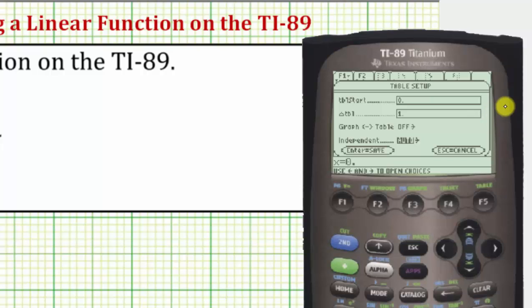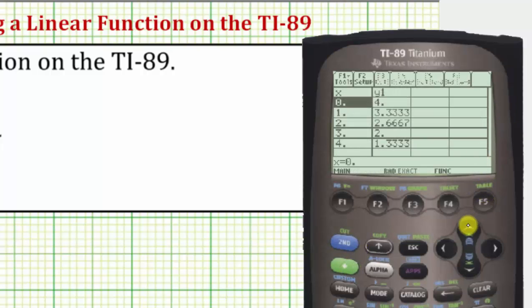Let's go back to the table by pressing diamond F5. And now if we scroll up or down, we can see as many points as we wish that would be on the given line. So if we were graphing this on our paper, we would select the more convenient coordinates, for example, the coordinates where both coordinates are integers.